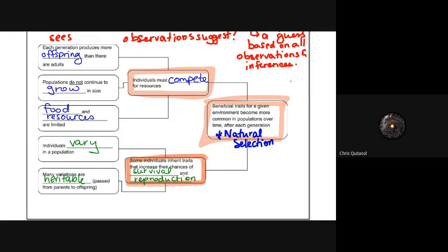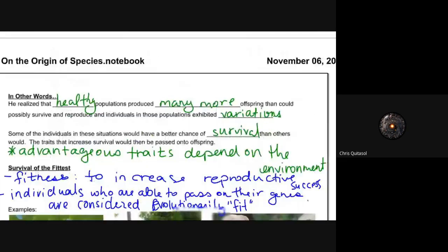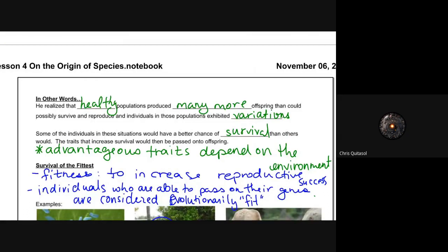It's the big idea in biology with regards to evolution—these five observations, the two inferences, and then the one major theory that Darwin came up with. We've seen a lot of this already in our class, both in this unit and last unit, with regards to specifically the variation in a population as well as heritable traits. In other words, he realized that a healthy population produced many more offspring than could possibly survive, and those individuals and populations exhibited variations. Some had a much better chance at surviving than others, and as a result, the traits that allowed for that increase in survivability would be passed on to offspring.